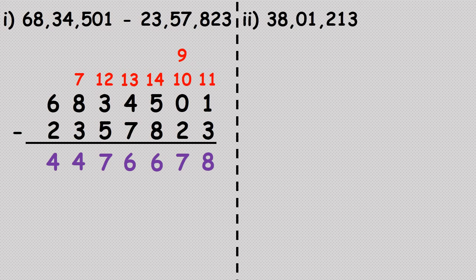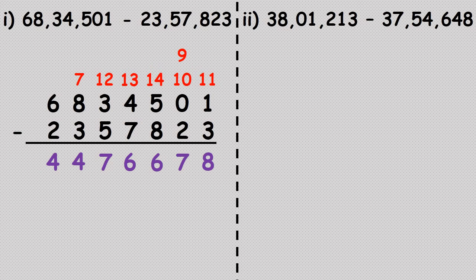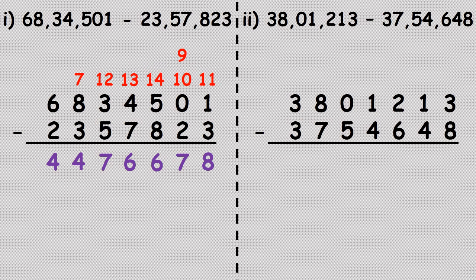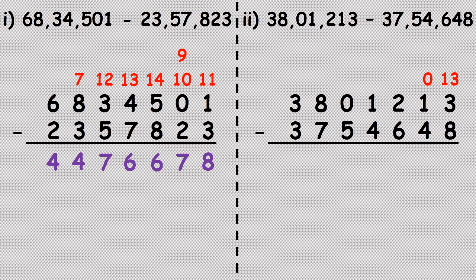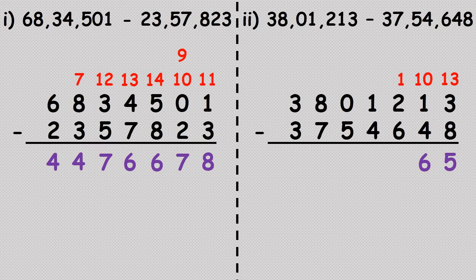Another example: subtract thirty-seven lakh fifty-four thousand six hundred and forty-eight from thirty-eight lakh one thousand two hundred and thirteen. We arrange numbers as per place value and start subtracting from the units place. Three minus eight is not possible — we borrow, one becomes zero and three becomes thirteen. Thirteen minus eight is five. We cannot subtract four from zero — borrow from two, two becomes one and zero becomes ten. Ten minus four is six.